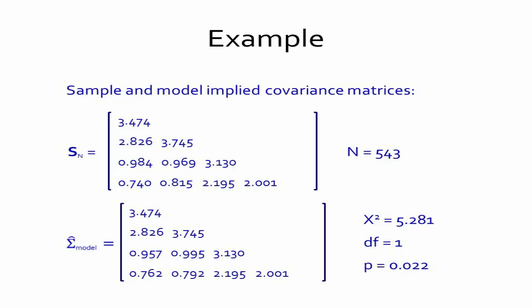After estimating the model with data from 543 participants, we compare the observed covariance matrix to the model-implied covariance matrix and obtain a chi-square test. This chi-square has a value of 5.28 with one degree of freedom and a significant p-value of 0.02. In other words, it would be unlikely to obtain this sample covariance matrix if the model-implied covariance matrix equaled the population covariance matrix. Our model fits significantly worse than a fully saturated model.